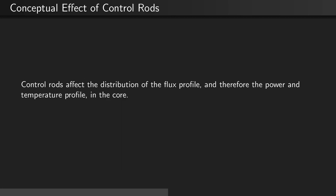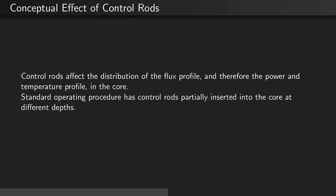Control rods affect the distribution of the flux profile, and therefore also the power and temperature profiles, inside of the core. Standard operating procedure for most reactors has control rods partially inserted into the core at different depths depending on where they are.